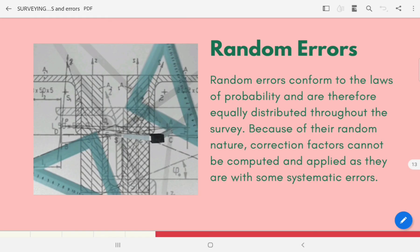Random errors conform to the laws of probability and are therefore equally distributed throughout the survey. Because of their random nature, correction factors cannot be computed and applied as they are with some systematic errors. However, they can be estimated using a procedure based on the laws of probability known as the least squares method of adjustment. This method computes the most probable adjusted values and the precision of the survey. The least squares method may also reveal the presence of large blunders.